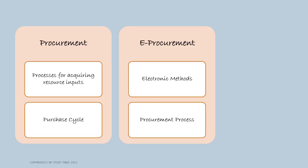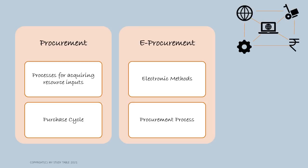E-procurement refers to the processes for acquiring the various resource inputs to the primary activities of an organization. It covers all the activities needed to obtain items from a supplier, basically talking about the whole purchases cycle. E-procurement is used to describe the electronic methods used in every stage of the procurement process, from identification of the organization's requirements through to the payments.